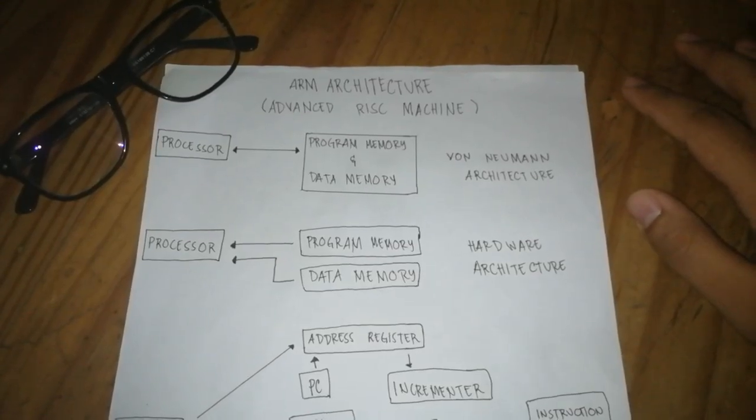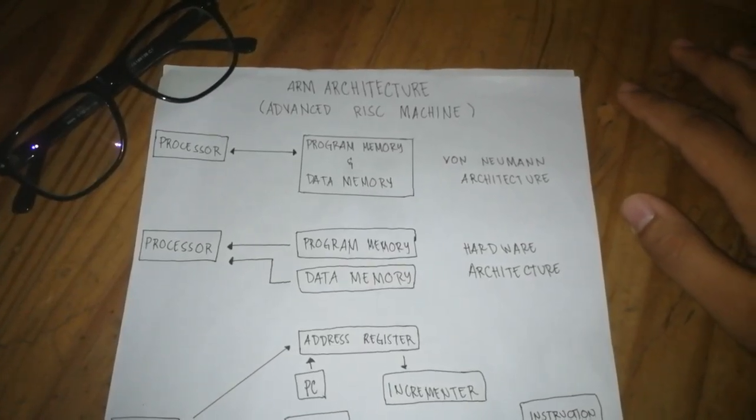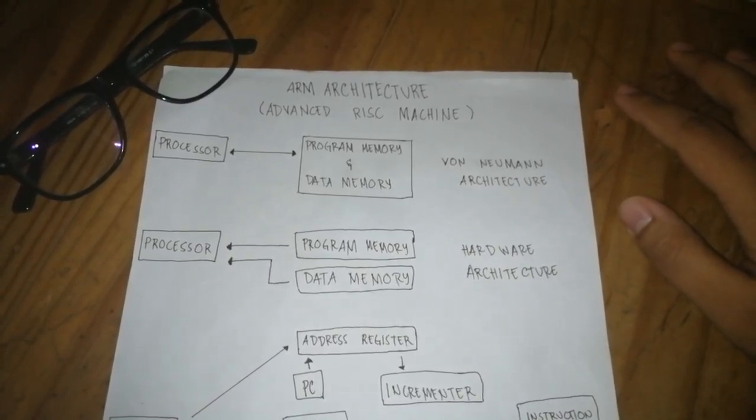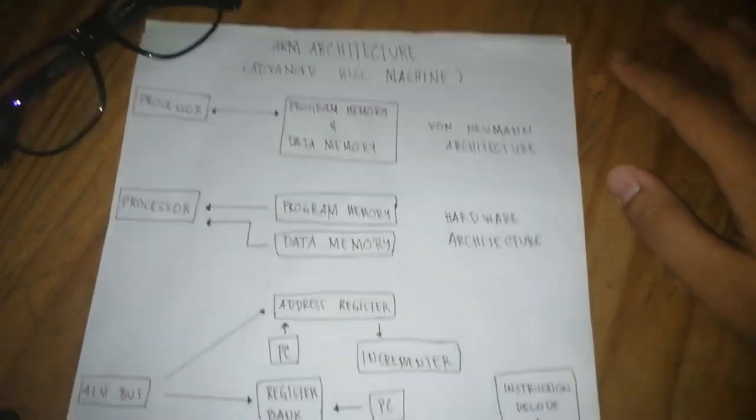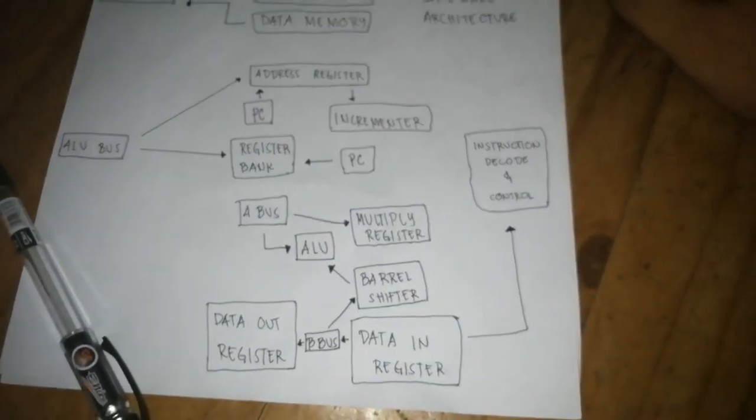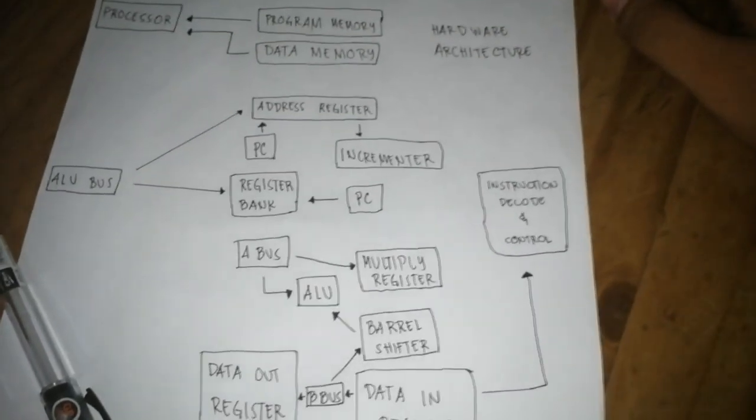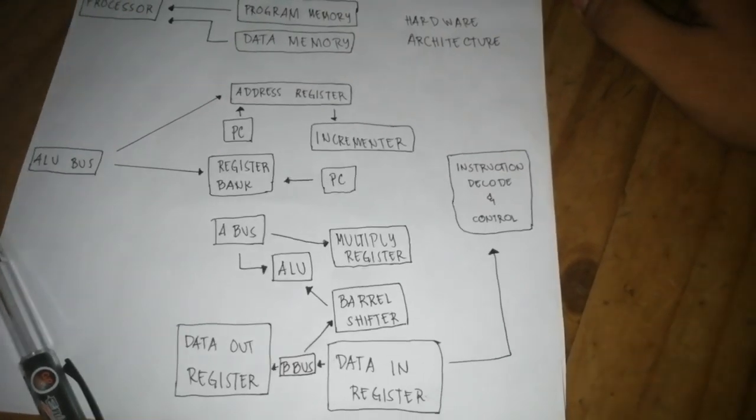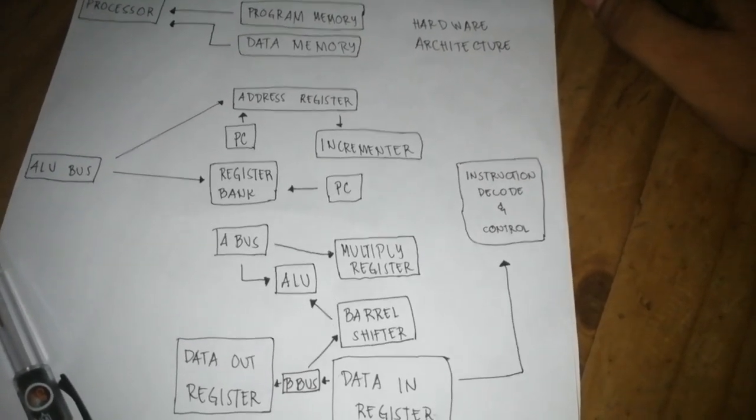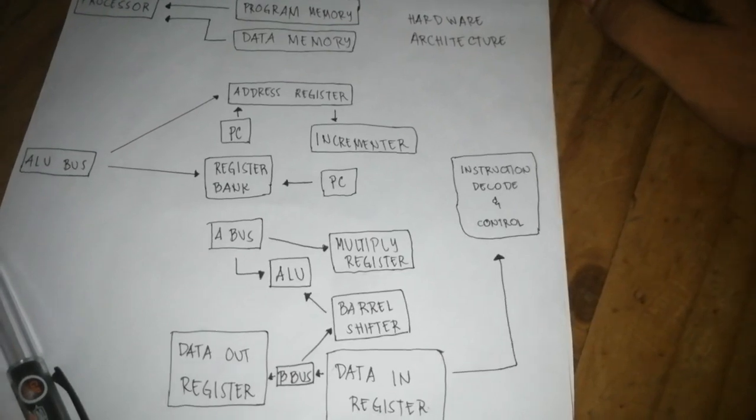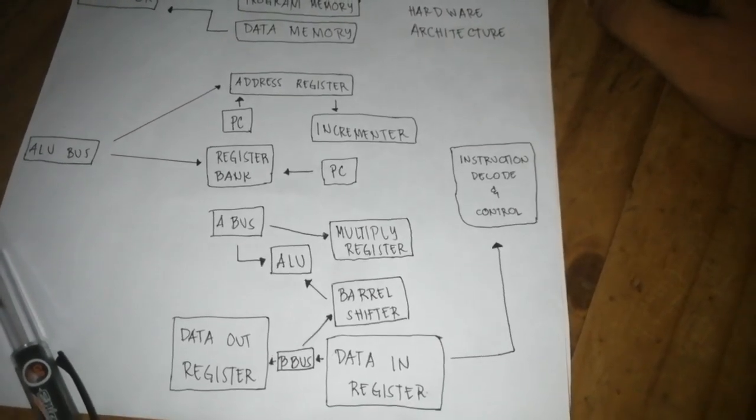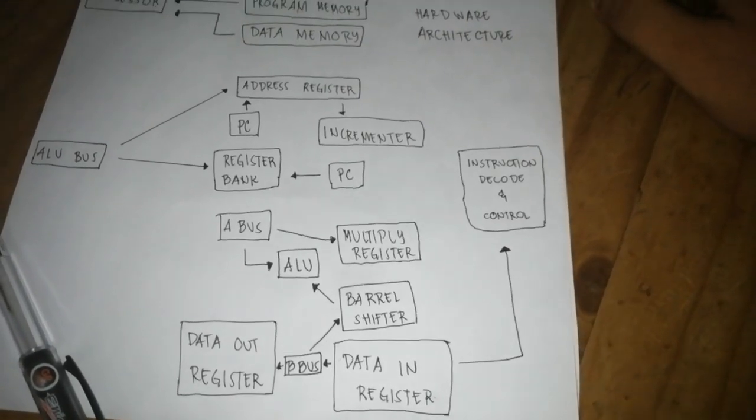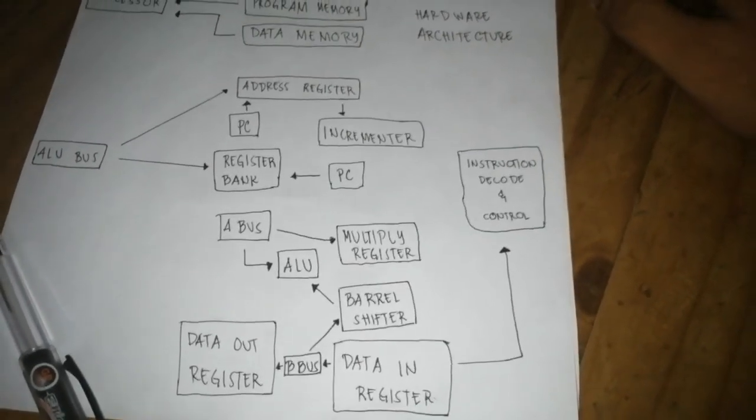This is the instruction when the register copies the processor to the memory. Here we will talk about the ARM diagram. You see we have address register, ALU, bus, register bank, incrementer, instruction decode and control data, register multiply, register barrel shifter, ABAS ALU, and data out register.